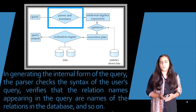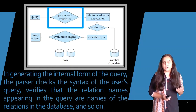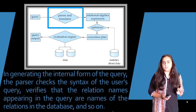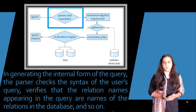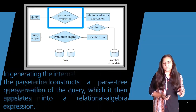The system also verifies the relation names appearing in the query to make sure those tables are available in the system. That is the first thing checked — whether the table names mentioned in the query are actually present — and after that, the whole syntax is checked, including whether column names are correct and conditions are proper.